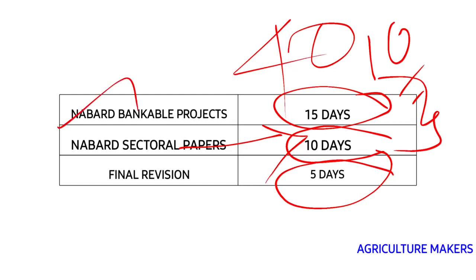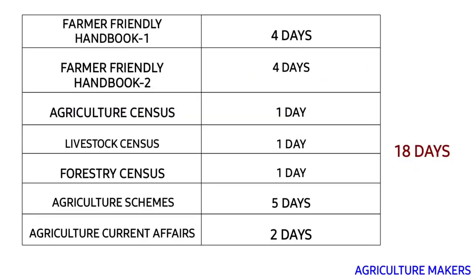You have to revise subjects then and there, and also make a final revision so that you go through each subject twice or thrice — it will be easy to remember during your mains examination. Coming to October, I have provided it for the preparation of the Farmers Friendly Handbook, census, and schemes. I have provided four days for completing the Farmers Friendly Handbook, covering only the important points, making notes, and revising.